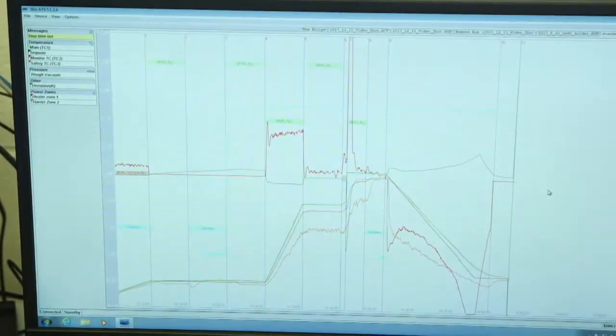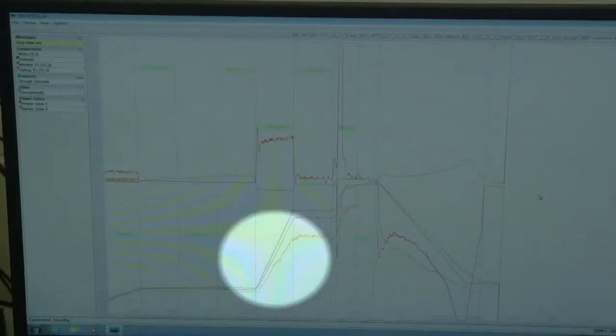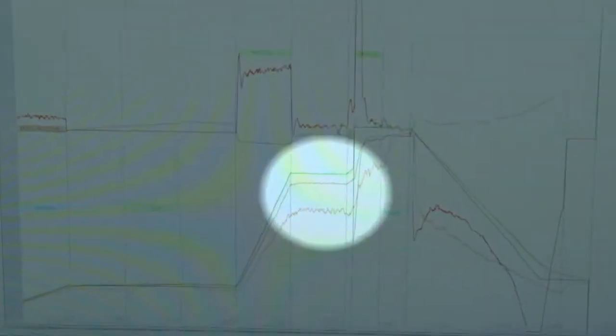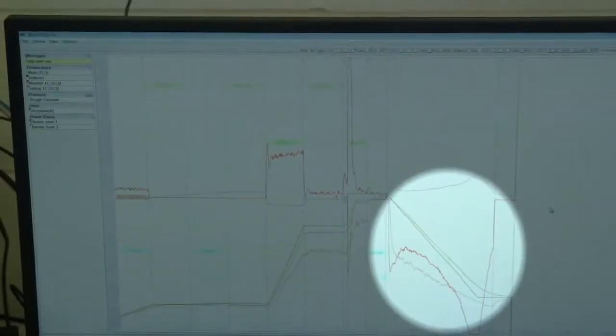A typical soldering reflow procedure may include a ramp to soak temperature, soak, ramp to peak, reflow at peak temperature, and finally cooling.